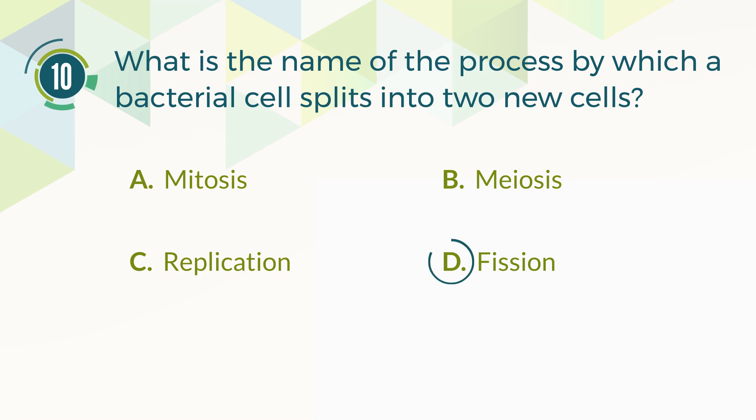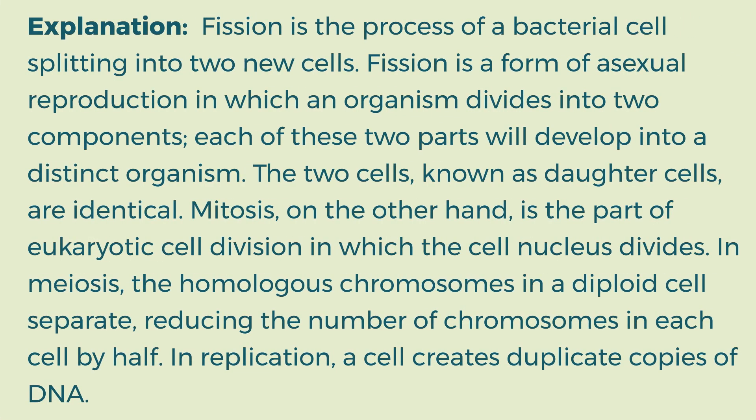The correct answer is D. Fission. Explanation: Fission is the process of a bacterial cell splitting into two new cells. Fission is a form of asexual reproduction in which an organism divides into two components, each of which will develop into a distinct organism. The two cells, known as daughter cells, are identical. Mitosis, on the other hand, is the part of eukaryotic cell division in which the cell nucleus divides. In meiosis, the homologous chromosomes in a diploid cell separate, reducing the number of chromosomes in each cell by half. In replication, a cell creates duplicate copies of DNA.